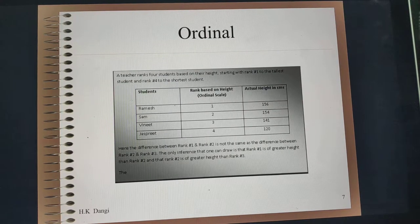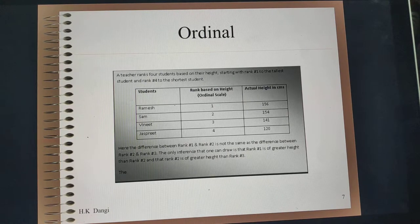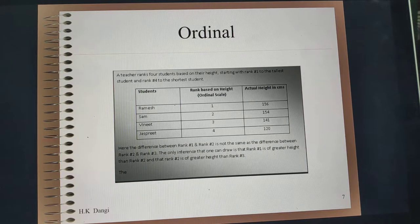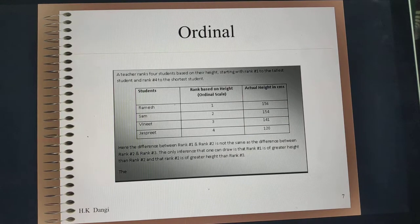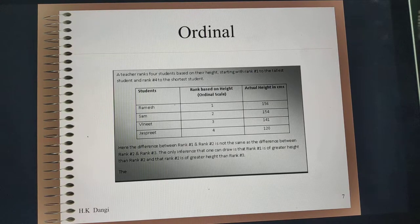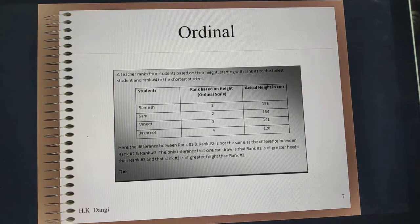Research scales could also have an ordinal level of measurement. For example, four different students are scored differently in an exam or their heights are measured. Let's say Ramesh is the tallest so he is ranked one, and Jaspreet is the smallest so he is ranked four. You can only know the relative order, but the differences between ranks may or may not be equal.